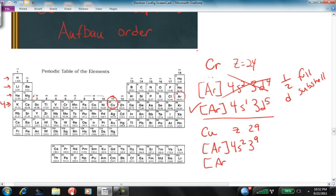But, experimental results show that the actual electron configuration is 4s1 3d10.